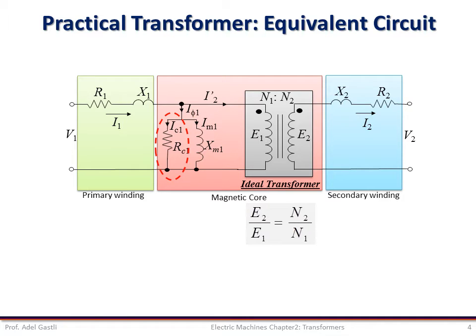On the other hand, the core loss can be represented by a resistance RC. Therefore, we can represent the magnetic core with the electric parallel branch and the ideal transformer that converts the voltage and current according to the winding turns ratio, as we have seen in the previous part.